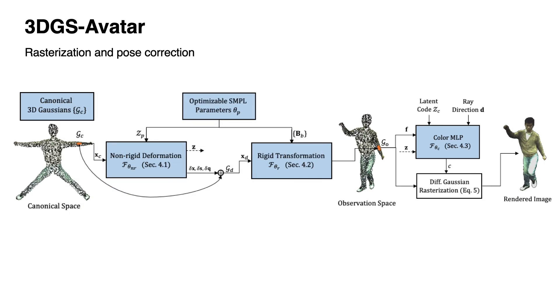Finally, we use the differentiable Gaussian rasterizer to render the image and also optimize SMPL parameters to account for inaccurate SMPL fittings.